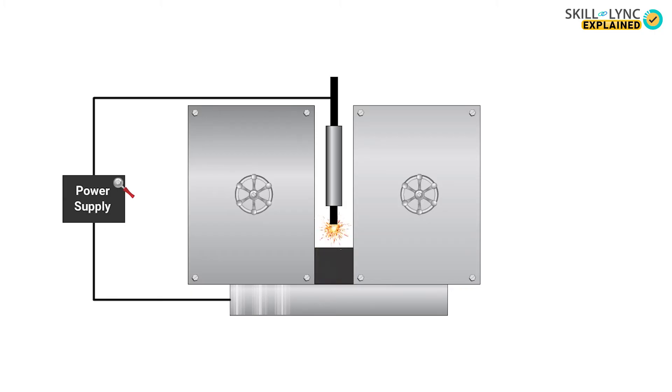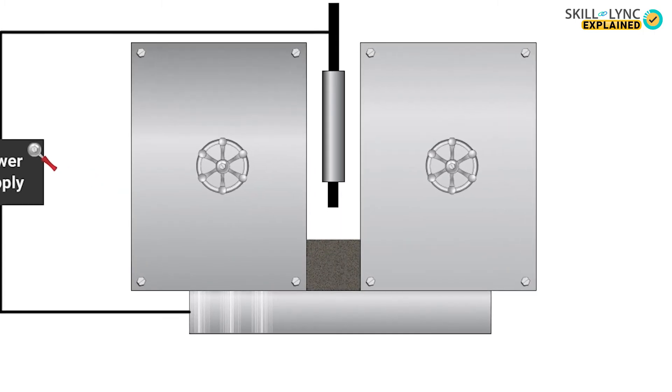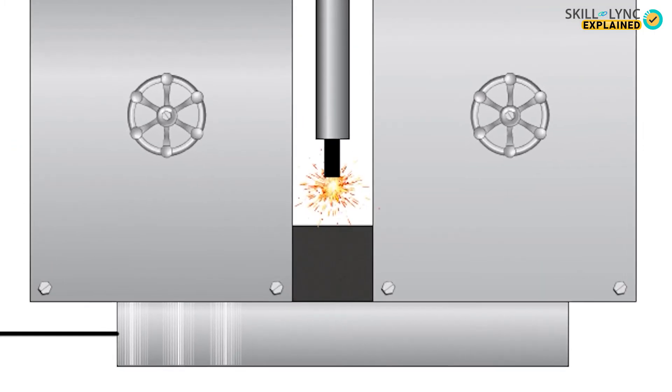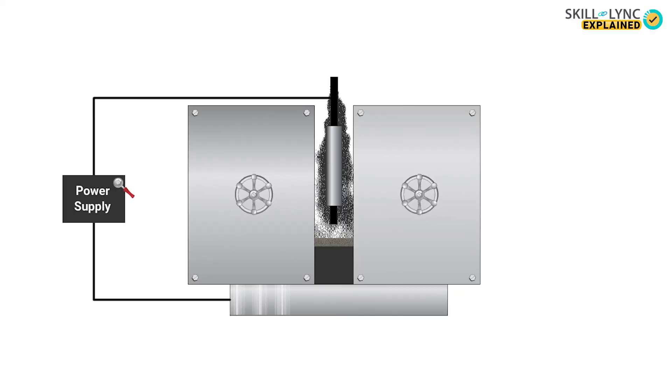An arc is initiated between the electrode material and the flux. Due to the high temperature of the arc, the flux material is melted. More flux is added into the gap till the molten slag reaches the tip of the electrode. After this, the arc is then extinguished.